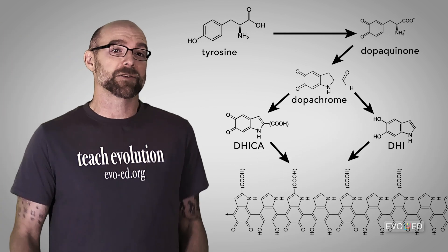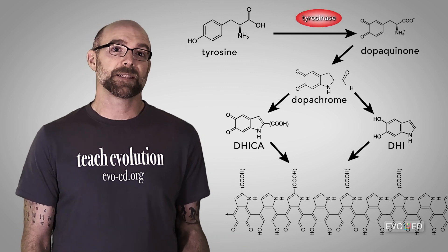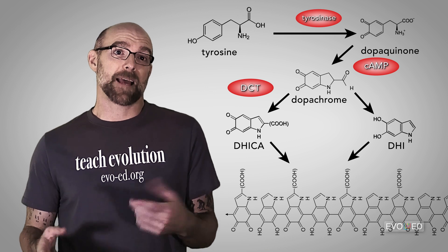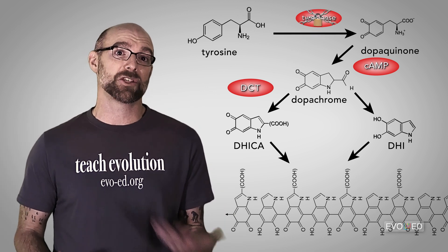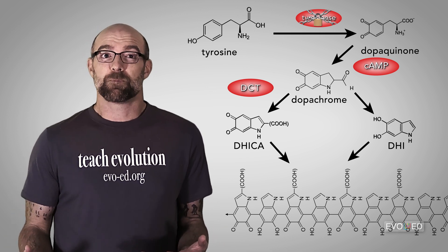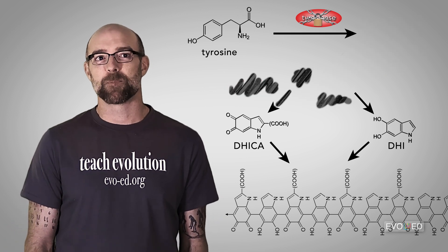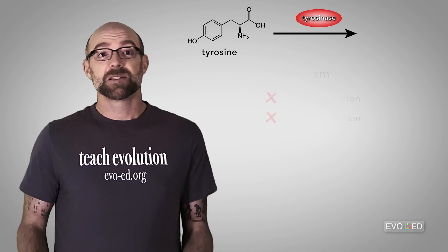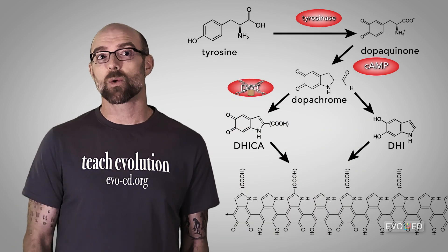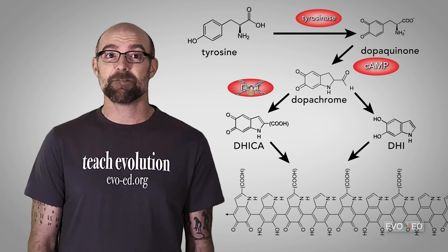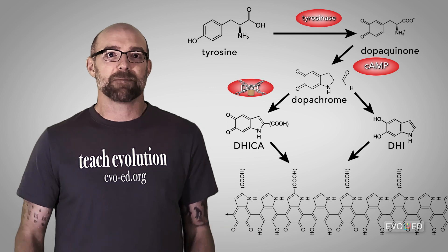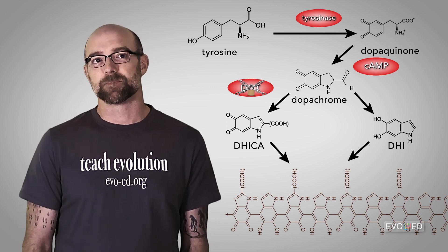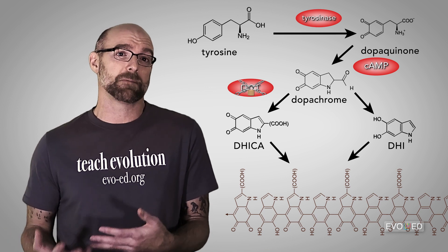So we have a few key players to consider: the enzyme tyrosinase, the molecule cAMP, and the enzyme dopachrome tautomerase, or DCT. If the tyrosinase enzyme is inhibited, or if there's a mutation in the tyrosinase gene that changes how the resulting protein works, that would be catastrophic to the whole pigment-producing pathway — this can lead to a rare condition called albinism, where a person is unable to produce hair or skin pigmentation. Similarly, if the DCT protein is suppressed or mutated, that too would change the amount of eumelanin produced, and there are even DCT gene mutations linked to albinism, depending on the nature of the mutation.